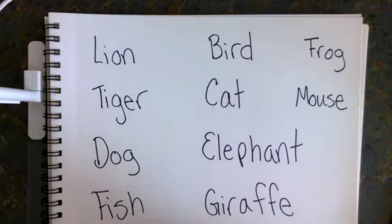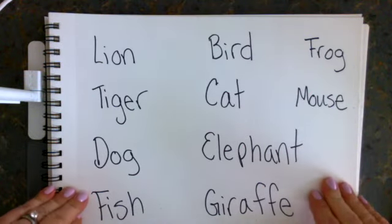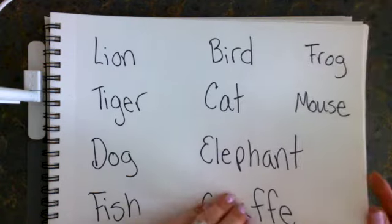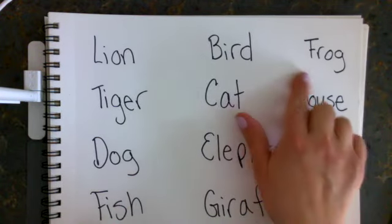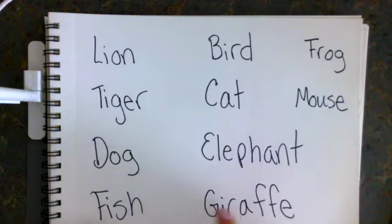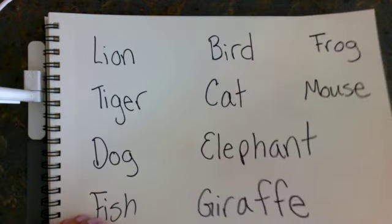We need to decide what animal we want to make, and here are some different ideas. You could do a lion, a bird, a frog, a tiger, a cat, a mouse, a dog, an elephant, a fish, a giraffe, or any other animal you can think of, and I think I'm going to do a tiger.